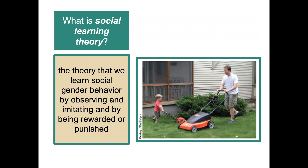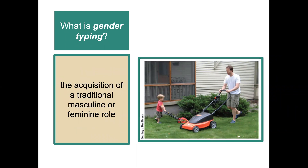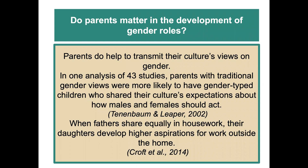Social learning theory is the theory that we learn social gender behavior by observing, imitating, and by being rewarded or punished — think back to reward and punishment and BF Skinner. Gender typing is the acquisition of a traditional masculine or feminine role. Do parents matter in the development of gender roles? Parents do help transmit their culture's views on gender. In one analysis of 43 studies, parents with traditional gender views were more likely to have gender-typed children. Some other research shows that when fathers share equally in housework, their daughters develop higher aspirations for work outside the home.